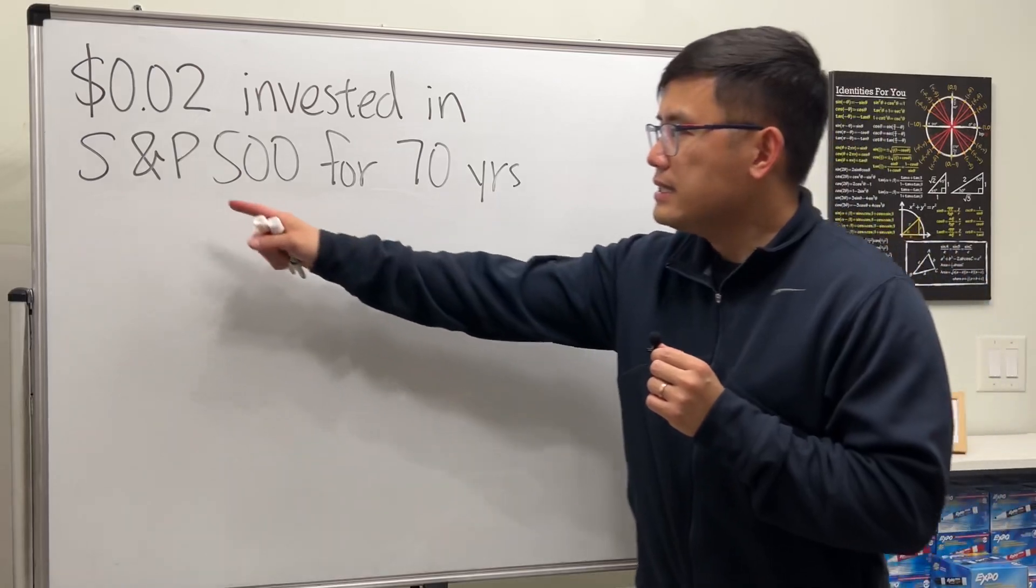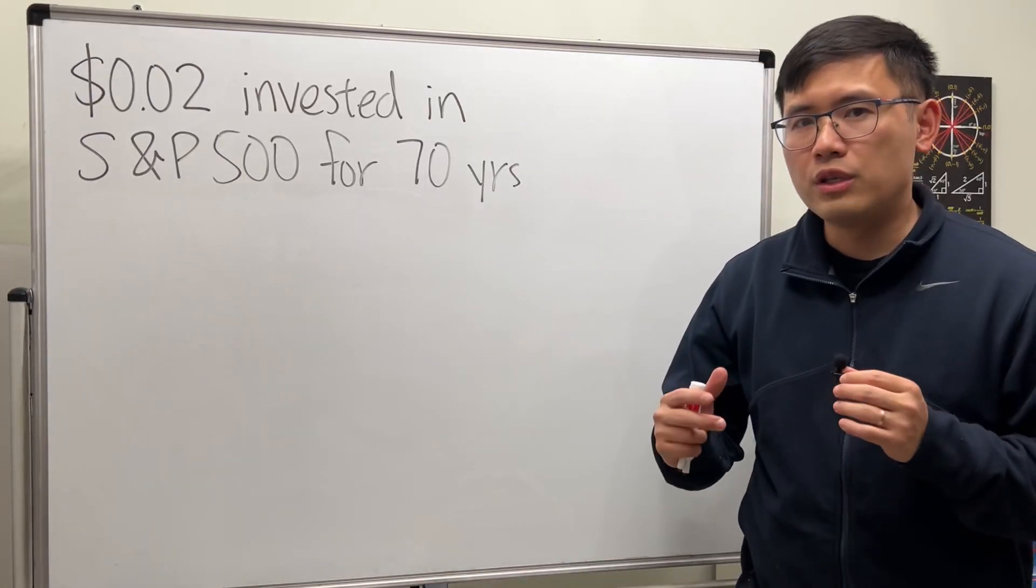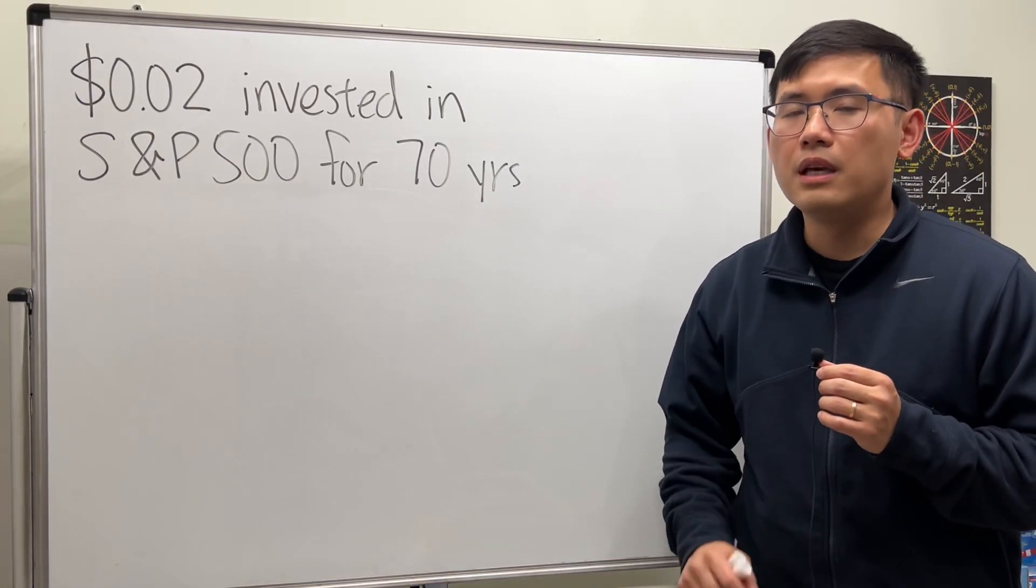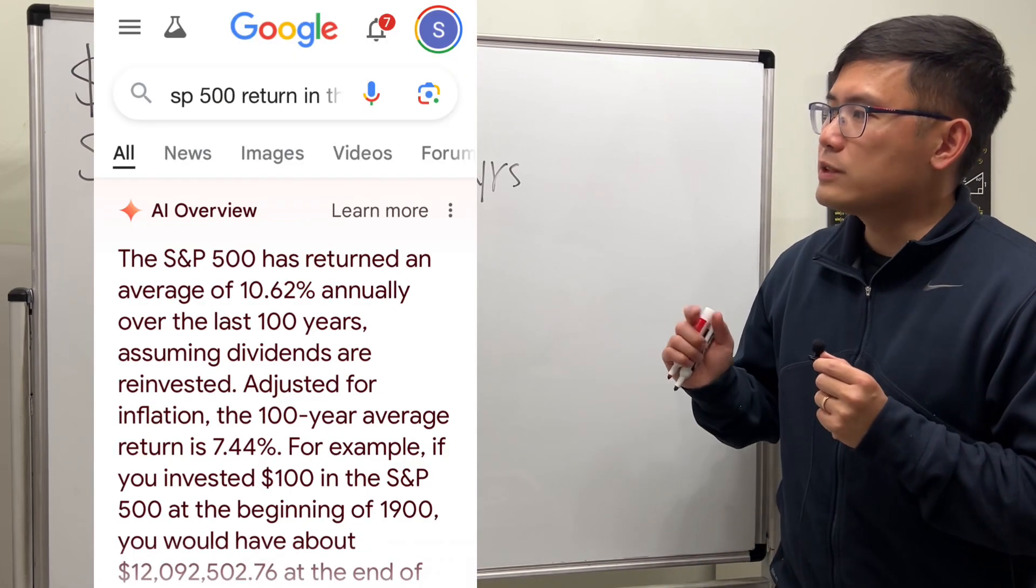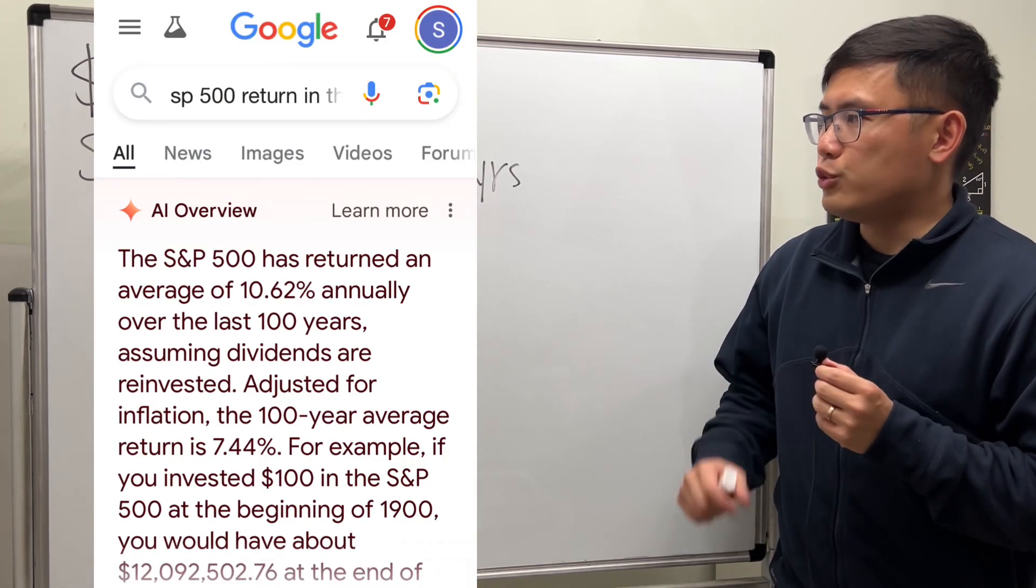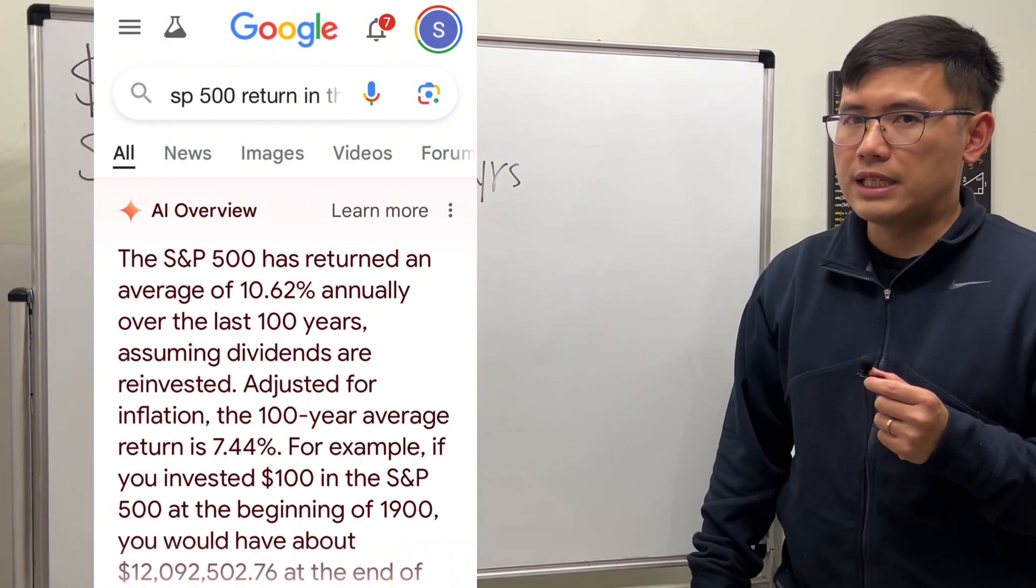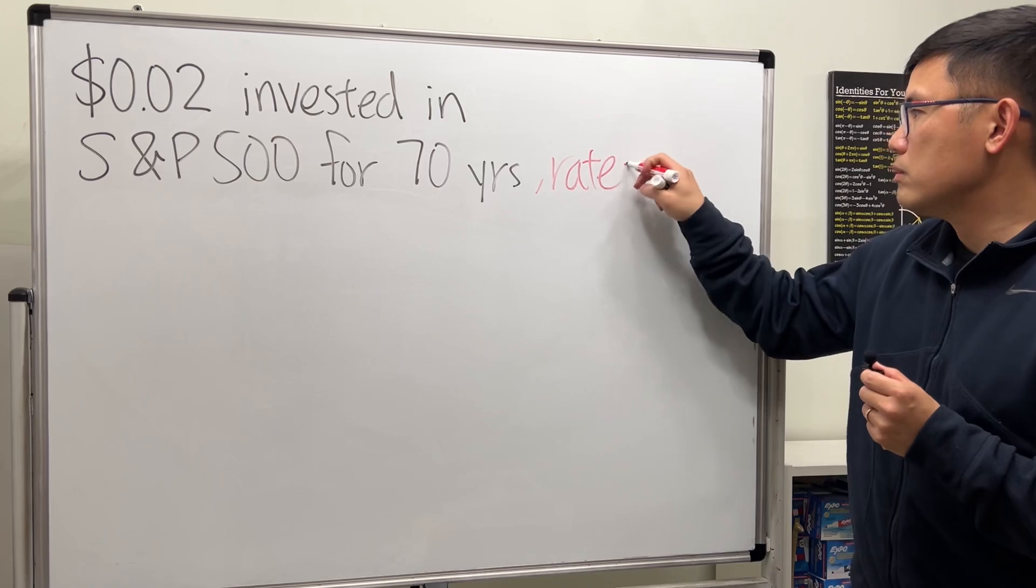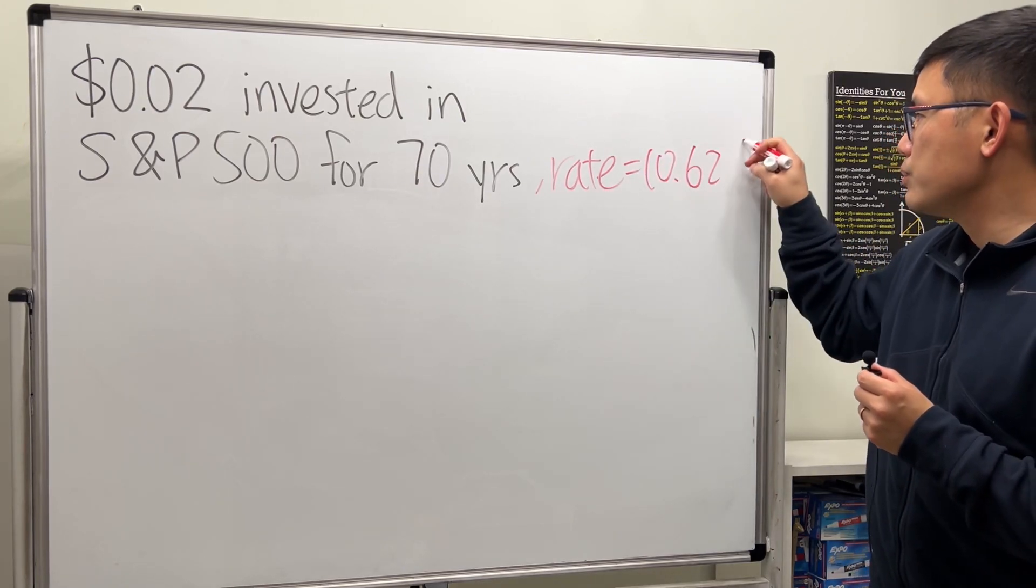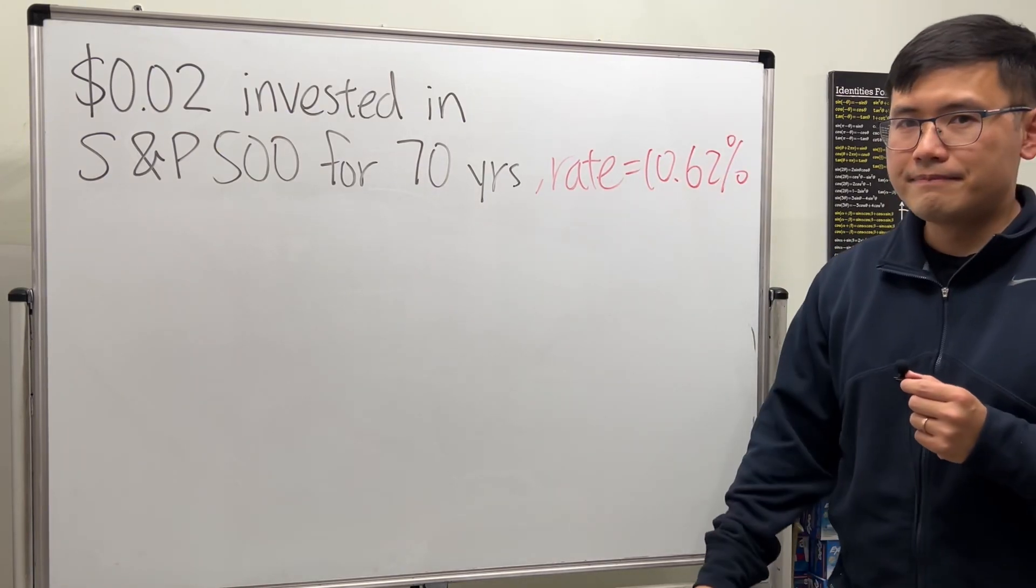And the S&P 500 is just a collection of the 500 biggest companies in the US. You can do a quick Google search - in the past 100 years the average return rate is about 10.62 percent. So that's the number we are going to be using as well, 10.62 percent.